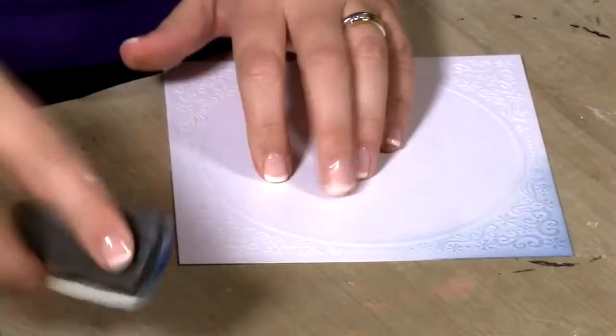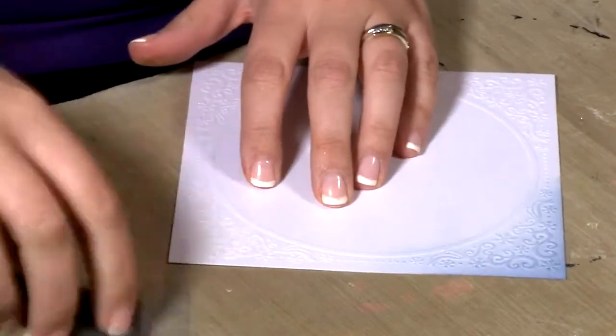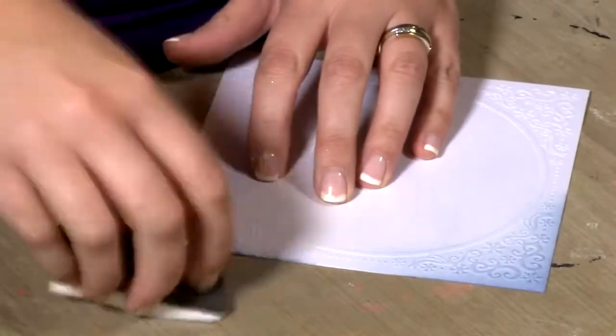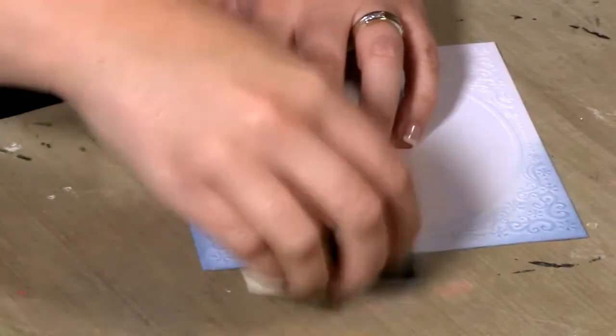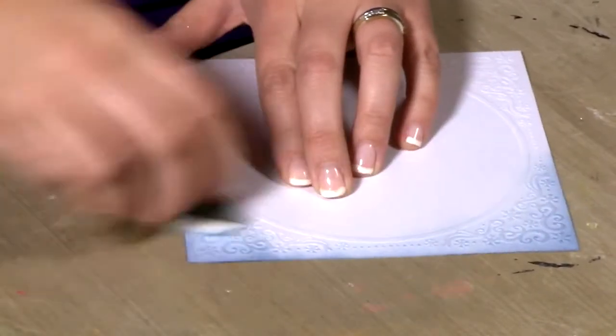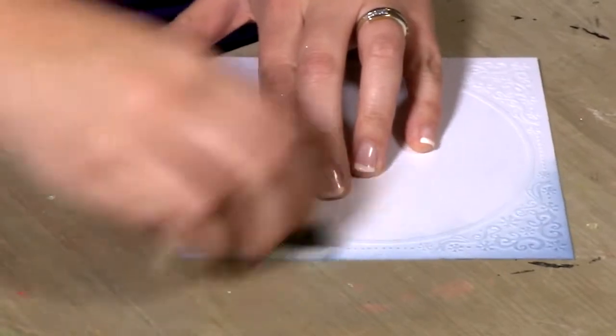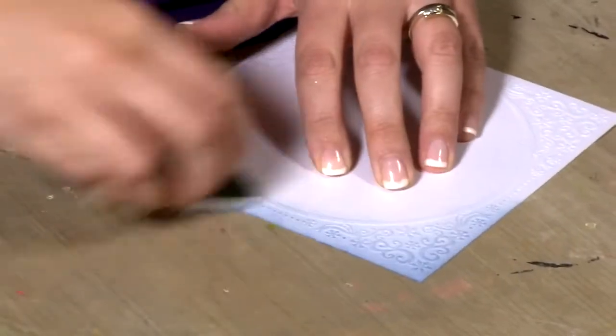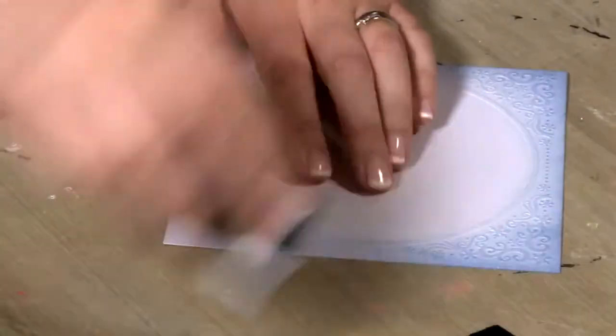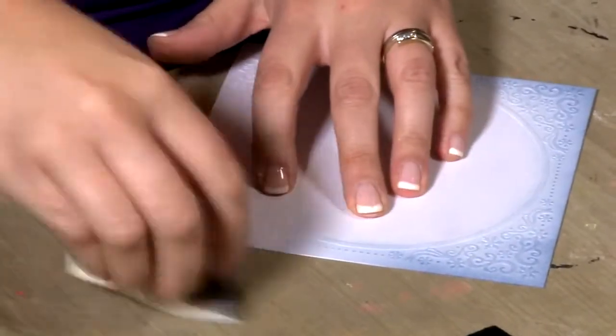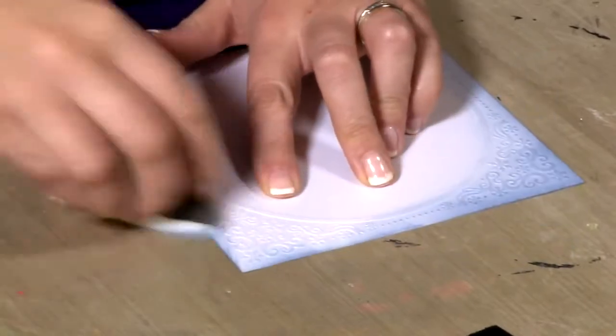I do the same again, pick up some of the ink, take off the excess, and then just start by applying a little bit onto the corner. The thing is with this, you can always add more. It's impossible to take it away. So start off with a little bit and then build up the intensity of the color as you go along. Really easy to do, but patience is a virtue here.